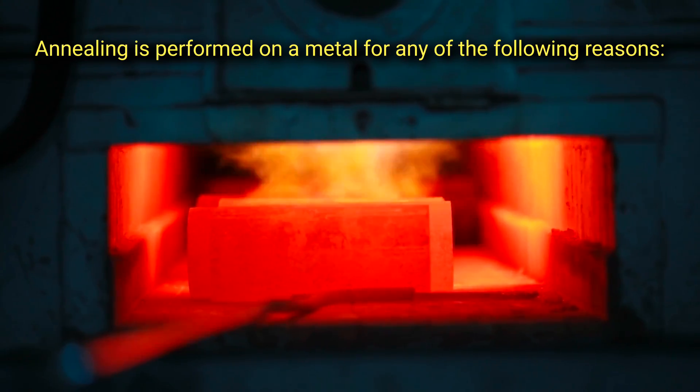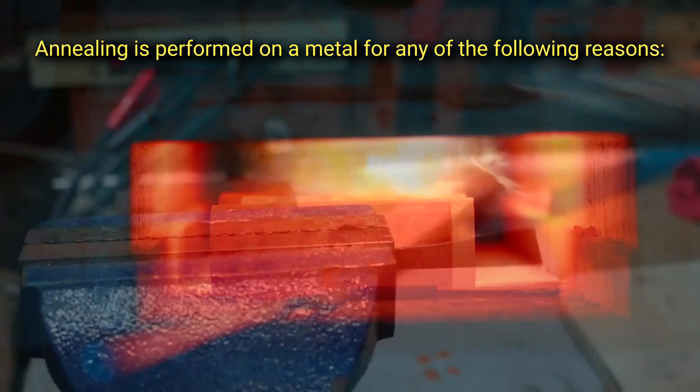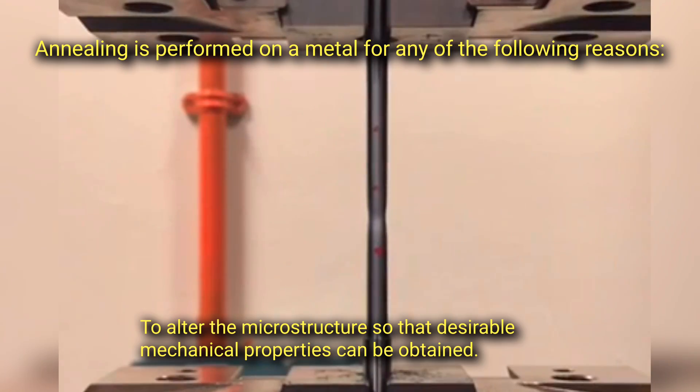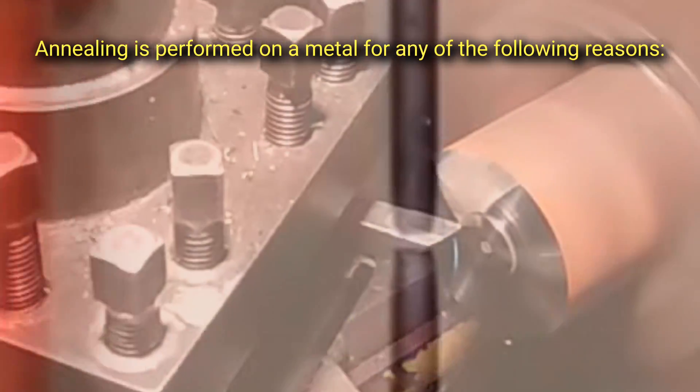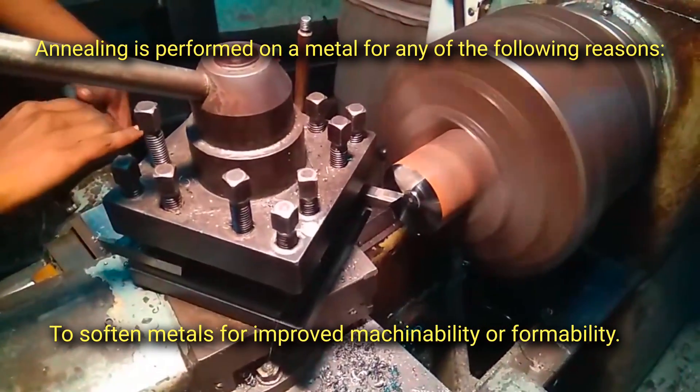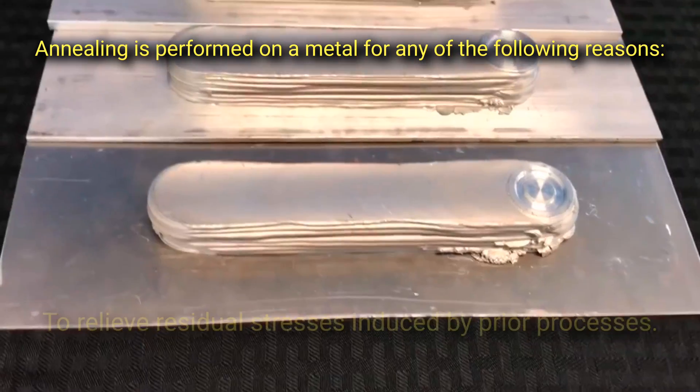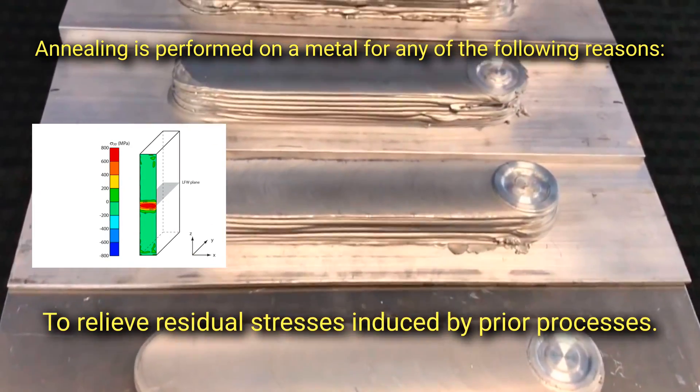Annealing is performed on a metal for any of the following reasons: to reduce hardness and brittleness, to alter the microstructure so that desirable mechanical properties can be obtained, to soften metals for improved machinability or formability, to recrystallize cold worked metals, and to relieve residual stresses induced by prior processes.